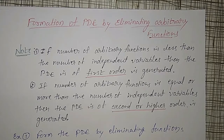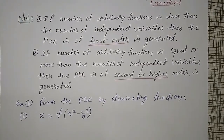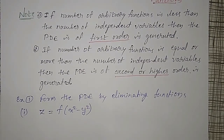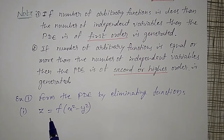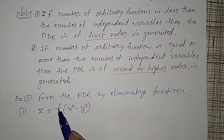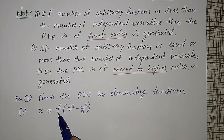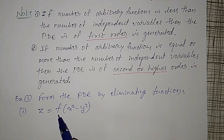Let me solve one example on how to form the PDE by eliminating an arbitrary function. The example is z = f(x² - y²). The arbitrary function is f, and I have to eliminate f so that the result contains only p, q, r, s, t — where p = ∂z/∂x and q = ∂z/∂y.